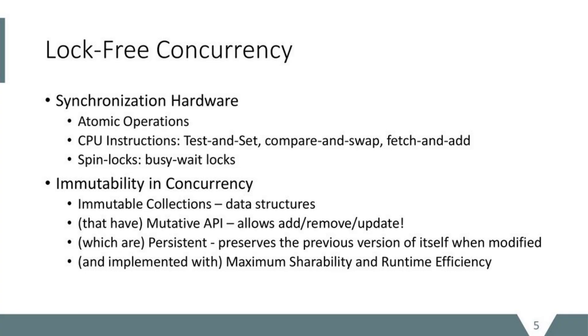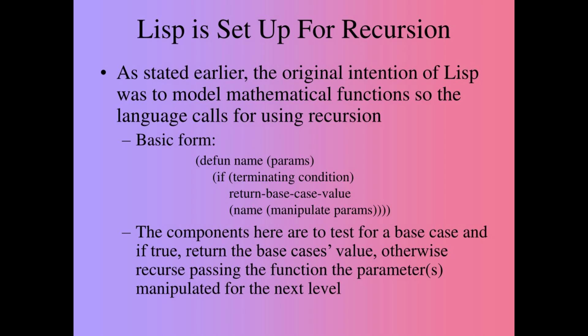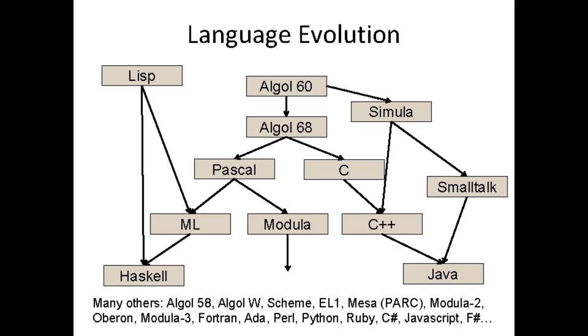Since the contents of immutable data structures cannot be modified in place, a brand new copy with updated contents must be made. A persistent data structure preserves the previous state of its data even after a new updated copy is created, rather than modifying the original in place. These two properties — persistence and immutability — allow for the safe update of information in concurrent and parallel systems. However, Lisp alone did not make persistent and immutable data structures a major practice; two future languages inspired by Lisp did: MetaLanguage (ML) and Haskell.